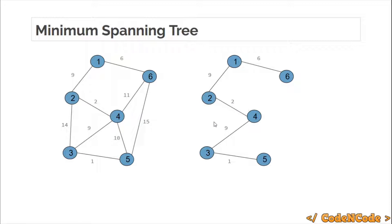For example, if we remove the edge with weight 2, there will be 2 connected components — nodes 1 to 6 in one component and nodes 3, 4, 5 in another. To reconnect them, we could add several edges, but the minimum weight option is 9, which is why we have 9 here. You can try out different combinations.